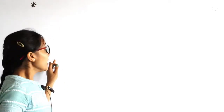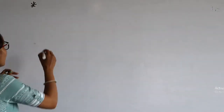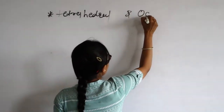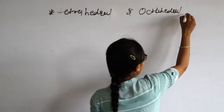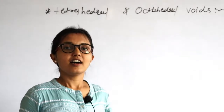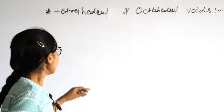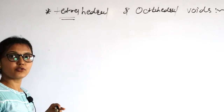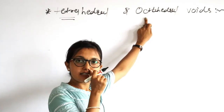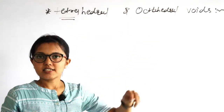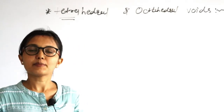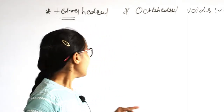First of all, tetra means four, and octa — octa means not eight, but we will consider six. In standard eleventh, geometrical shapes are present, and in those geometrical shapes, the octahedral shape is present. The best example of octahedral is SF6, and here voids are present.